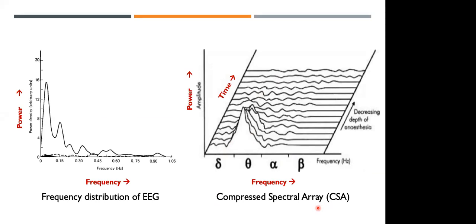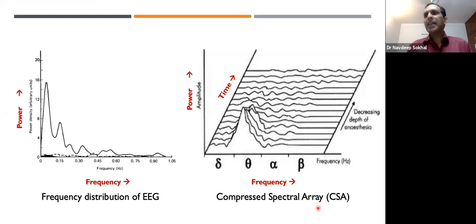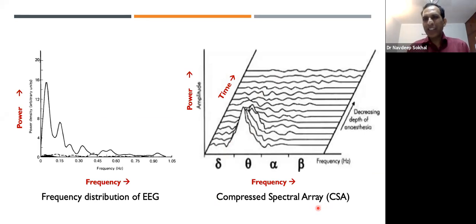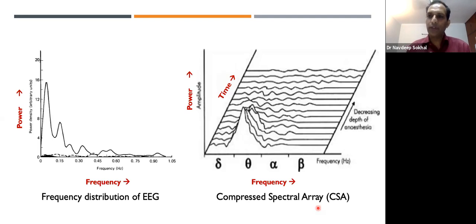A question from Dr. Swati: regarding values for spectral edge frequency — SEF is typically in the range of 12 to 15 or 16 Hz, meaning 90–95% of frequency power should lie below this spectrum. Various textbooks mention slightly different ranges: 5–6 Hz for median frequency and 12–16 Hz for SEF.